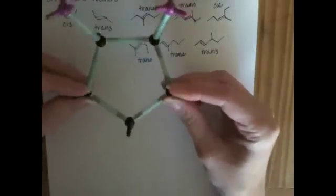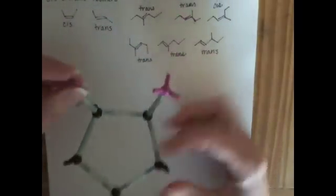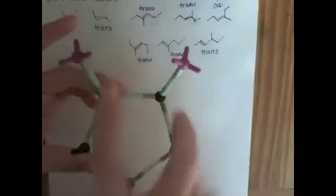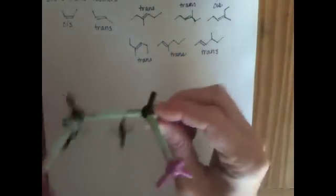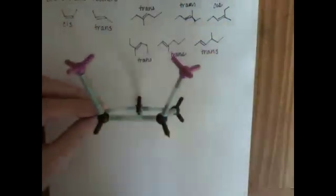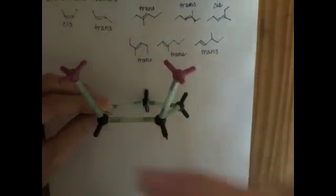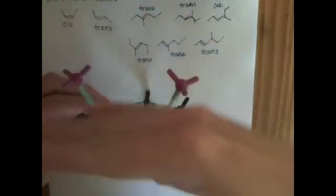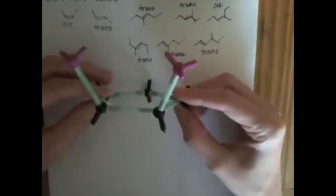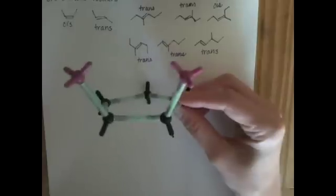For example, this is a cyclopentane, and I've put two halogens, purple atoms, on there. You can see that both of these halogens are sticking up. If you look down the plane of the ring, both of the halogens are up above the plane of the ring. They're on the same side of the ring. So this is a cis isomer.